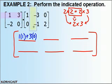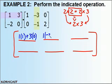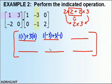Again, first times first: 1 times negative 3. Second times second: 3 times negative 1. Add them up. As you can see, I'm repeating the same process over and over, just with different columns. Once you get the hang of this little process, it's pretty easy.